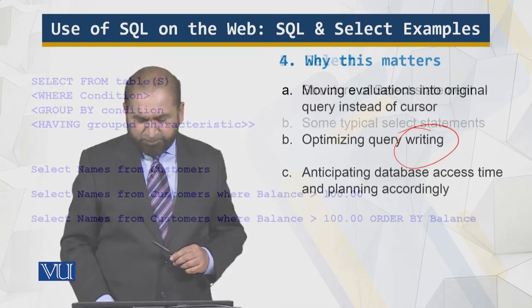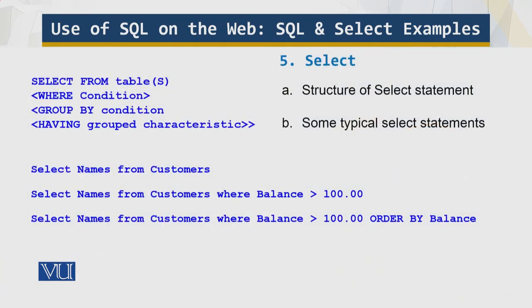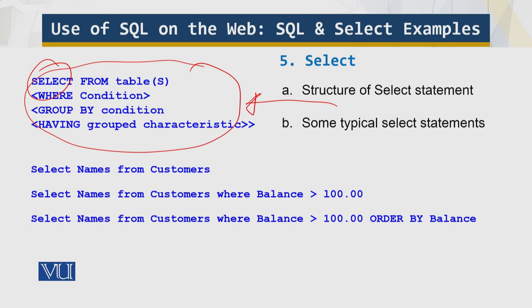Now some examples of the SELECT statement. This is the structure of the standard SELECT statement, and here are some examples: give me the names of all the customers where the balance is greater than zero, and order them — by default this is ascending order. That's all I have for you in this module. Thank you for your time.